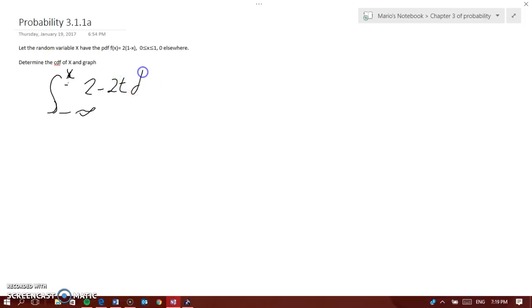Now what we do is we need to find what it would equal to. When you're doing the integral, the unknown is T, then you will get 2T minus T squared.